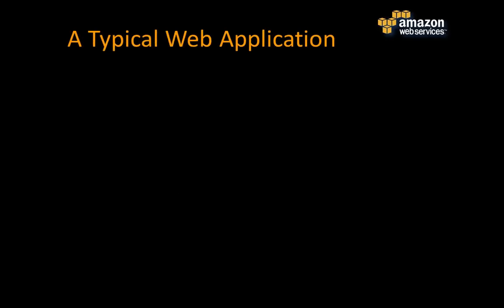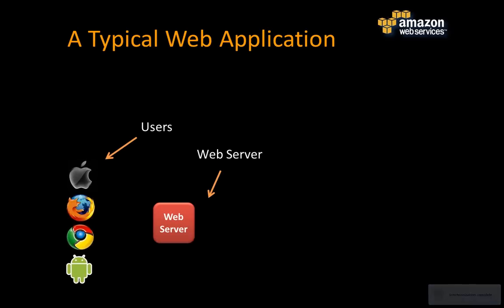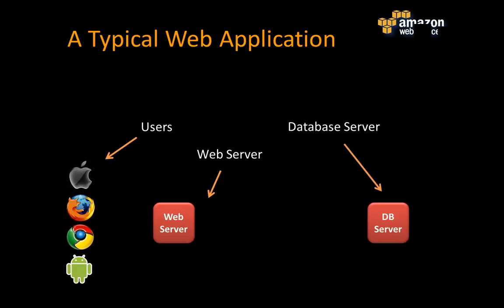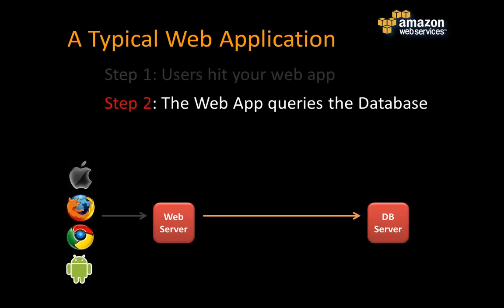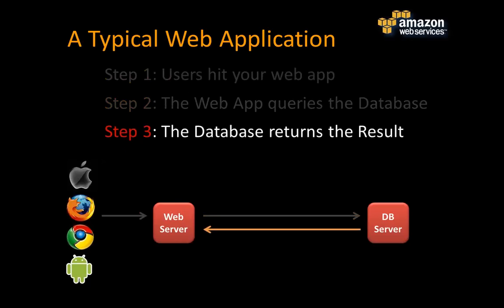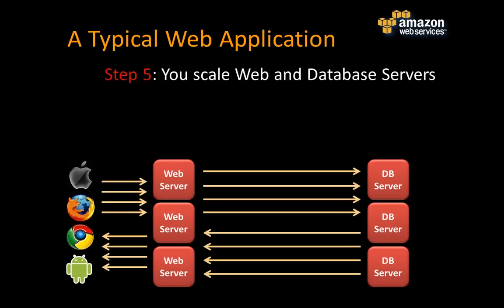Let's talk about a typical web application at a very simplistic level. We have users on multiple devices and different types of browsers, web servers, and a database server — we'll call it MySQL, but it could be any form of persistent storage. In a typical flow, users hit your web server, the web server makes a request to the database, the database returns results, and the web server puts that result on the page and returns it to the users. As you scale and traffic goes up, one common approach is to add more servers and database servers to maintain performance so user experience stays consistent.